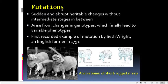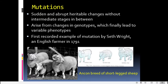How do mutations contribute? They are sudden and abrupt changes which occur in populations, but they are heritable — transferable to the next generation with no intermediate stages in between. They arise from changes in genotypes which finally lead to variable phenotypes. The first recorded example of mutation was in 1791 by a farmer Seth Wright, who found an Ancon breed of sheep with short legs — considered the first recorded example of mutation.